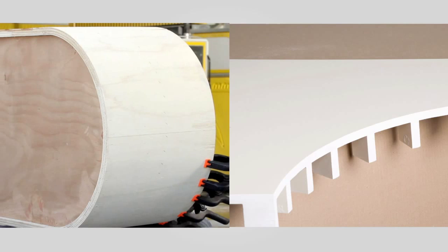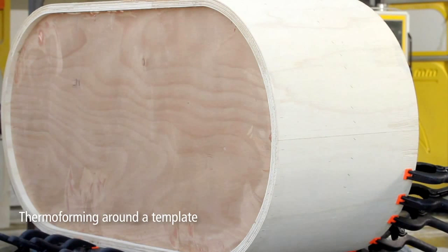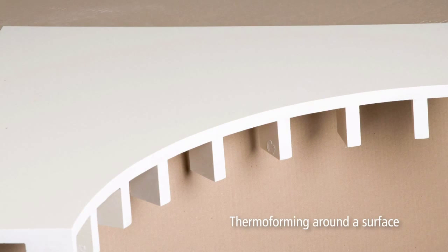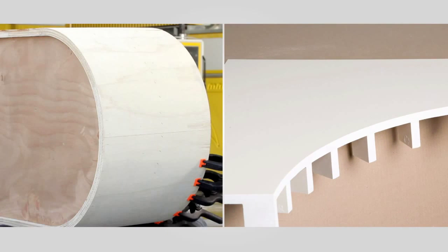One method is thermoforming around a template for which you will need to prepare a template in advance out of wood or another suitable material. The second method is thermoforming around a surface. For both methods, the preparations are the same.